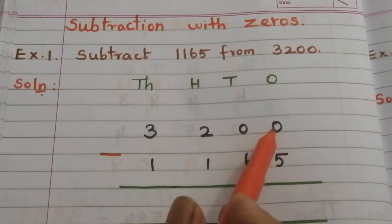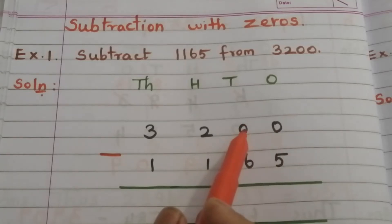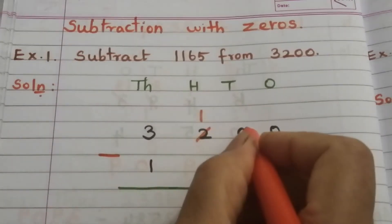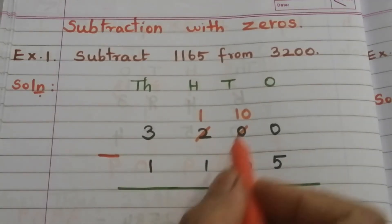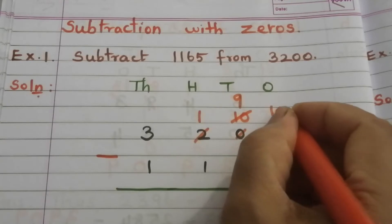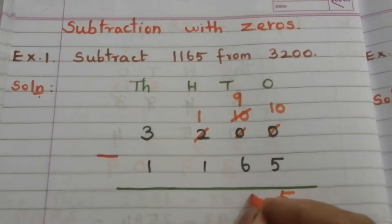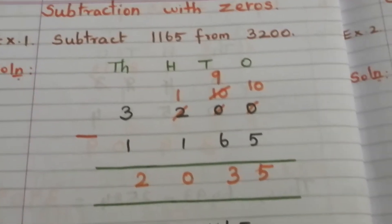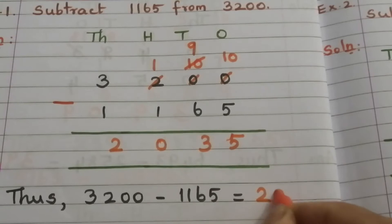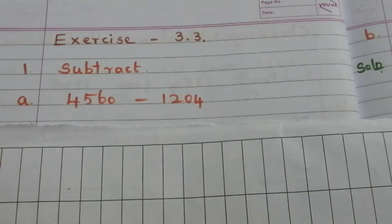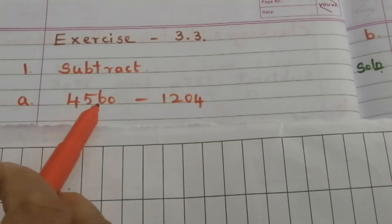5 is less than 0, so we can't subtract. We borrow from the tens place, but here also 0, so we move to the hundreds place. Borrow from 2 — 2 becomes 1 and this 0 becomes 10. We borrow from this 10: it becomes 9 and this becomes 10. 10 minus 5 is 5, 9 minus 6 is 3, 1 minus 1 is 0, 3 minus 1 is 2. So the answer is 2035.